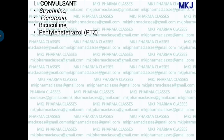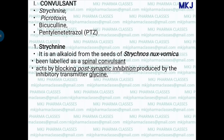The first convulsant is strychnine, an alkaloid obtained from the seeds of Strychnos nux-vomica. It is a poison and has been labeled as a spinal convulsant, because the dose which produces convulsion in a spinal animal is the same as in an intact animal. This is an important exam point. Strychnine acts by blocking post-synaptic inhibition produced by the inhibitory neurotransmitter glycine.